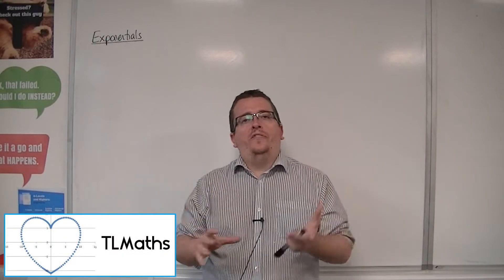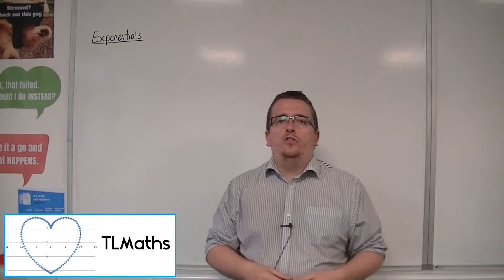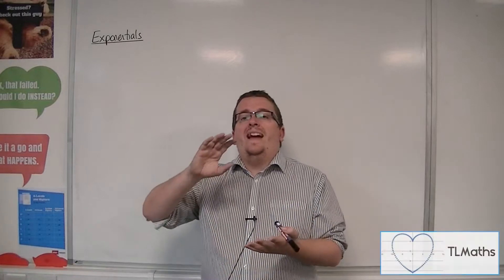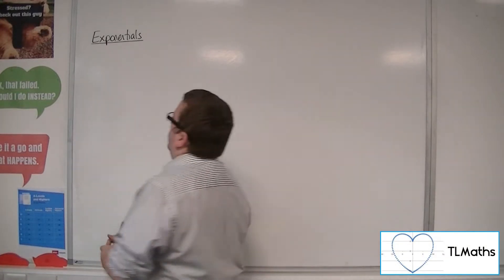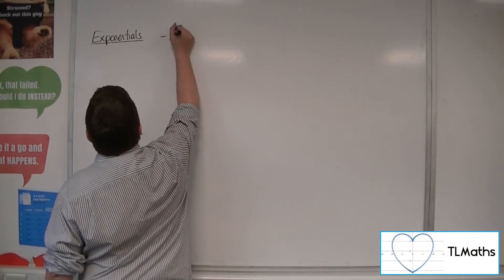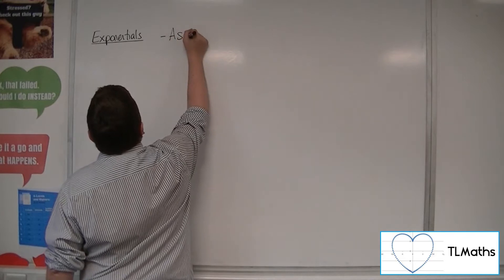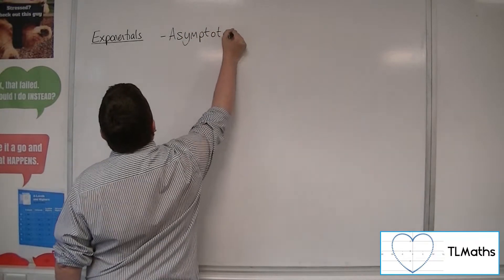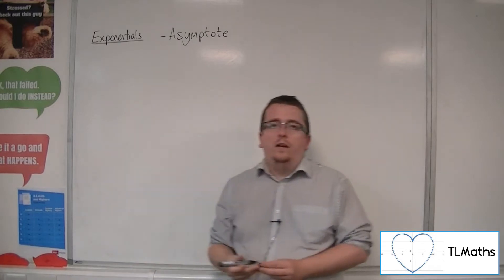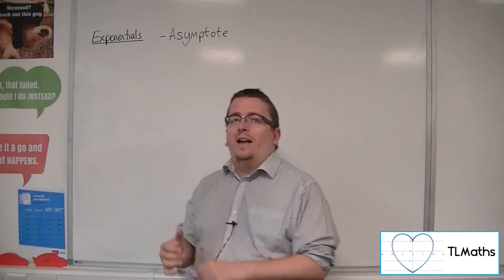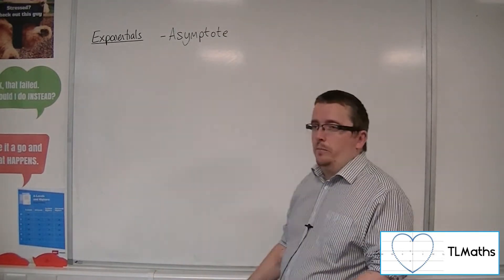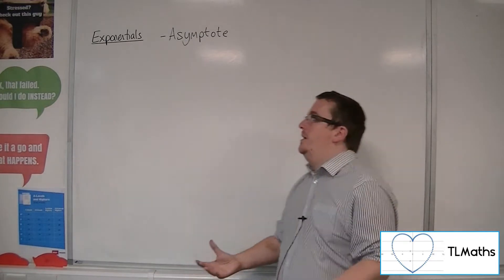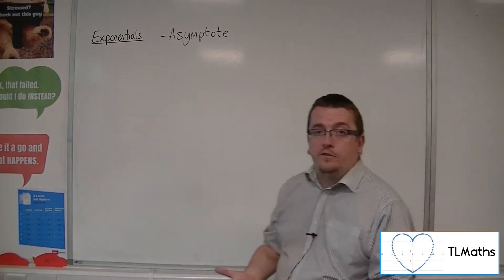In this video, I want to introduce you to a term known as an asymptote. It's got quite a strange spelling — we don't really pronounce the P, it's got a silent P. So asymptote. Some people pronounce it 'asymptote', but it sounds a little bit stranger if you do that.